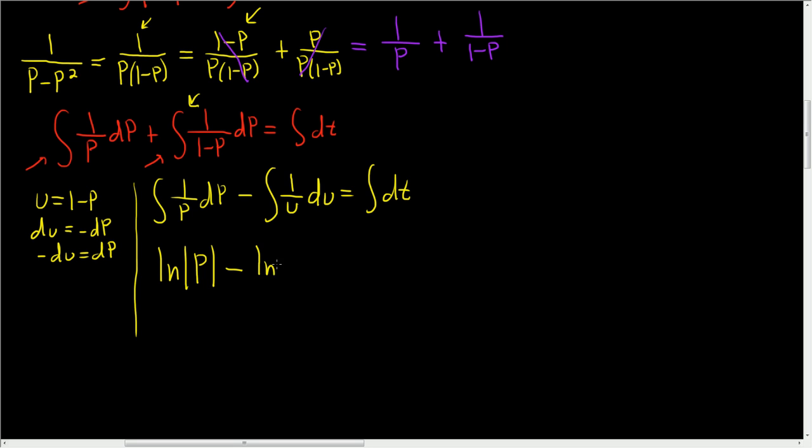So this ends up being the natural log of the absolute value of p minus, and this is the natural log of the absolute value of u. But u was 1 minus p. So we can skip a step there. And this integrates to simply t plus our constant, which I'll go ahead for now and call it c tilde. Why? At some point, it's going to change.